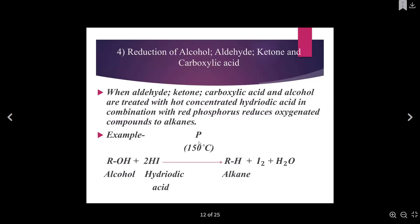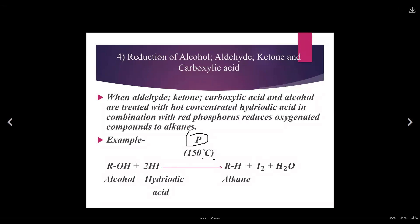The phosphorus is used at a temperature of 150 degrees centigrade. Hydrogen iodide reacts with alcohol to produce alkane plus iodine plus water. So the conditions of the reaction are: phosphorus must be added, the temperature must be 150 degrees centigrade, and the reactants — hydroiodic acid plus alcohol — will produce the alkane plus water and iodine molecules.